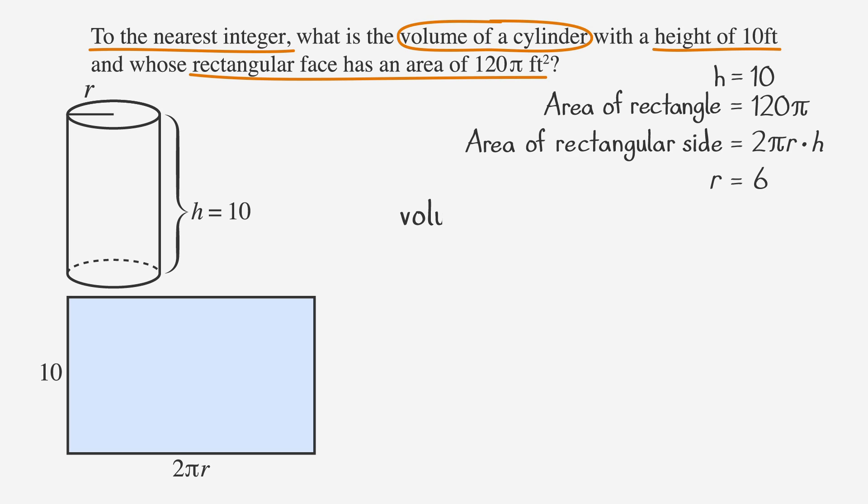Our last step is substituting into the volume equation for a cylinder. So since volume equals pi times r squared times height, plugging our values in, we get volume equals pi times 6 squared times 10. Squaring 6 and multiplying by 10, we get that volume equals 360 pi.